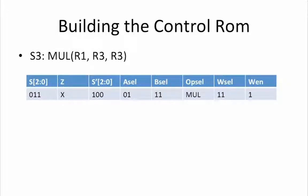We move on to state 3 whose current state is 011 and next state is 100. Asel equals 01, Bsel equals 11 and WN equals 1. Here, our OPsel is multiply to indicate that the operation to be executed here is a multiply.